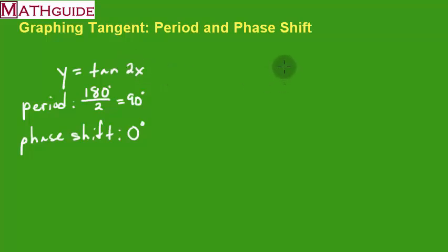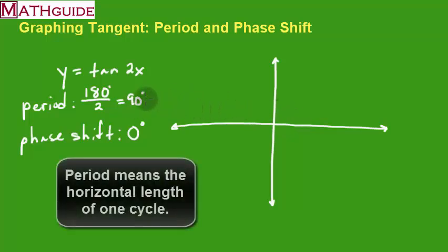This is pretty much a standard curve with a slight change in period. So what do you do to graph it? I'm going to draw a y-axis, I'm going to draw an x-axis. I've got this, and the length of one cycle is 90 degrees. So I'm going to go 90 degrees and center it right here at the origin.